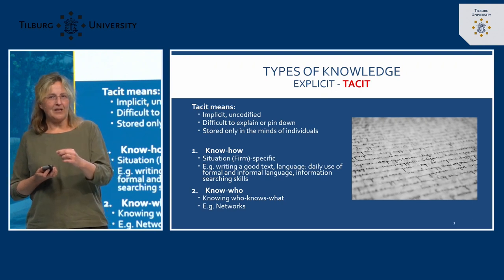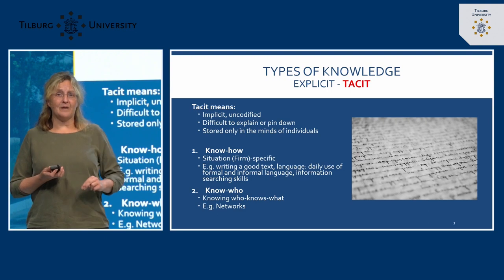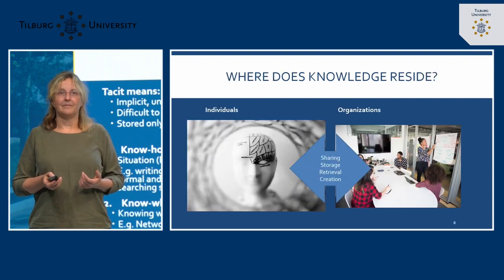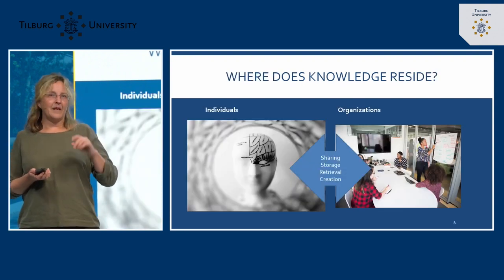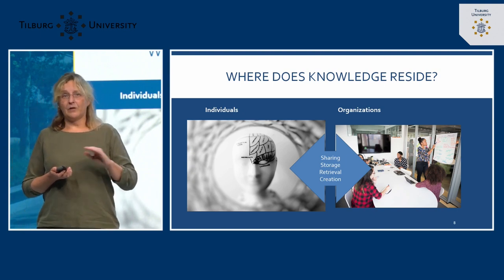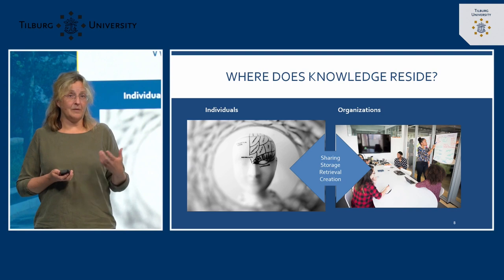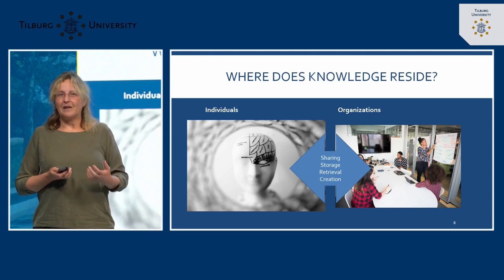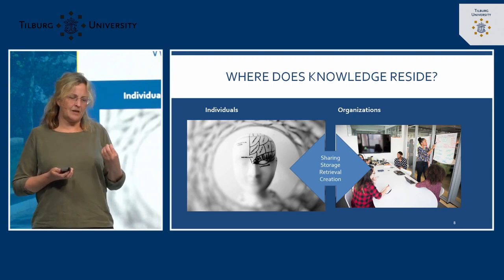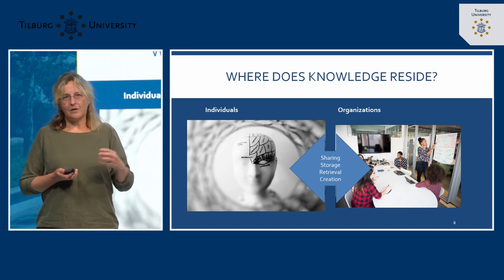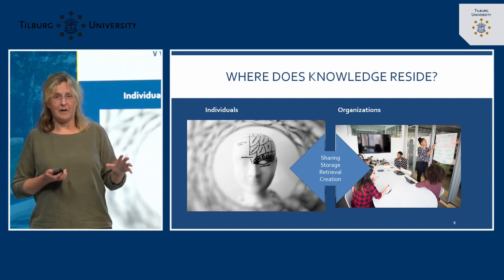Both the explicit and the tacit knowledge matter for performance. In organizations, this kind of knowledge resides on two levels. Individuals have knowledge — their diplomas and explicit knowledge — but they also know how things are done best and who to reach. A characteristic of knowledge is that it's stored in the minds of individuals. If you think back, we discussed how resources are non-transferable because they reside in individuals — if you take an individual out, you do something with that resource.